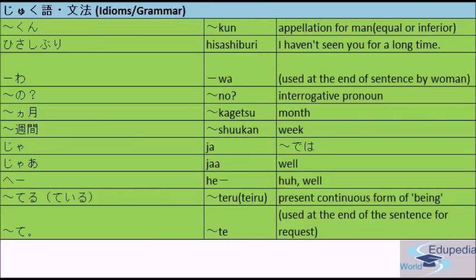The next one is 'teru' — the short form of 'te iru', which is the present continuous form of being. The last one is 'te', used at the end of a sentence for a request. For example, 'tabete kudasai' can be shortened to just 'tabete' — please eat.